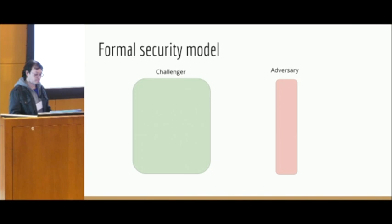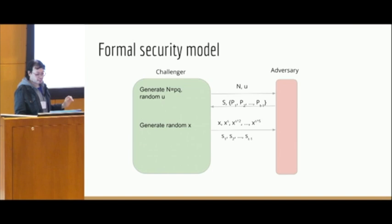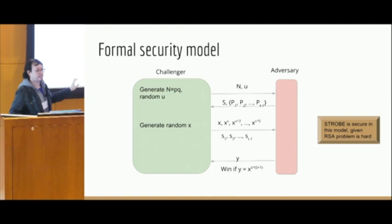That was the construction. Let's now talk about the formal security model. There is a challenger and an adversary. The challenger generates p, q, and also a prime u. The adversary outputs a value, an epoch number basically, capital S, that I want to attack this particular epoch. It also outputs a few of the parties that it wants to corrupt, p1 through pT minus 1. Then the challenger outputs random x. It also gives the values of the beacon output up to epoch S and also share values. The adversary wins if they can output the next epoch's random value. And we proved that Strobe is actually secure in this model, given that the RSA problem is hard.